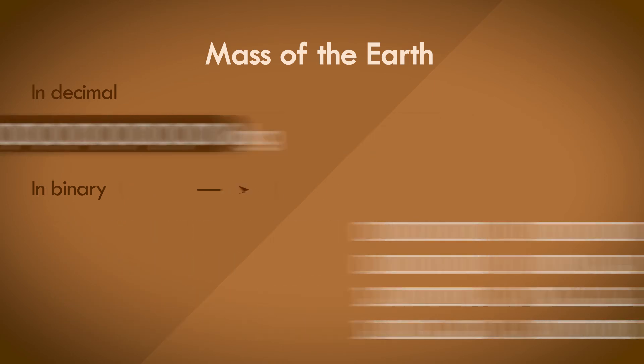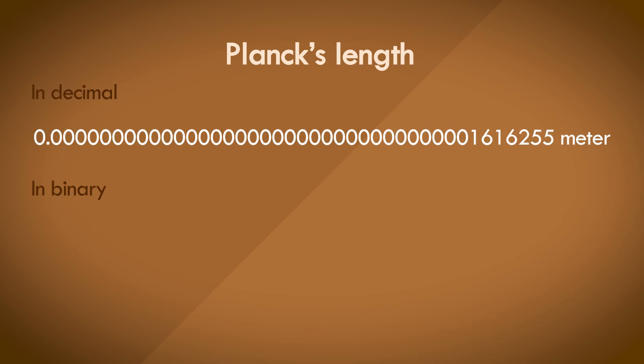What about really small numbers? Let's take this number for instance. It's an approximation of a universal constant in theoretical physics called Planck's length. It doesn't matter what it is, but it's an exceedingly small number as you can see. How would this be represented in binary? Sort of like this.